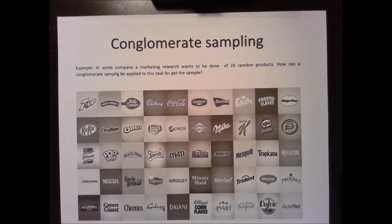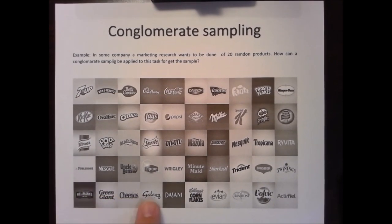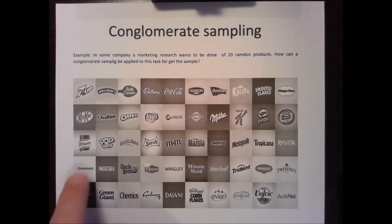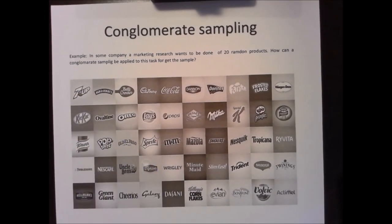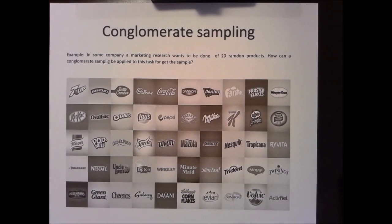The conglomerate sample example says: in some company, a marketing research wants to be done on random products. How can a conglomerate sampling be applied to get the sample? As you can see, we have 50 different products and I need to select 20. You can apply whatever grouping you want — for example, 5 groups of 10, or 10 groups of 5.